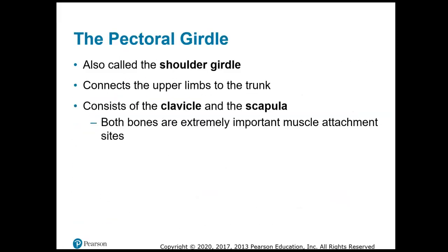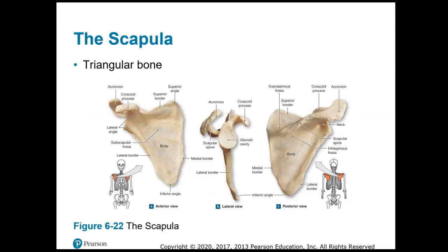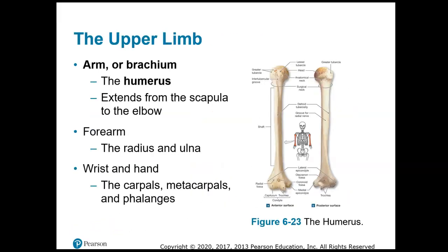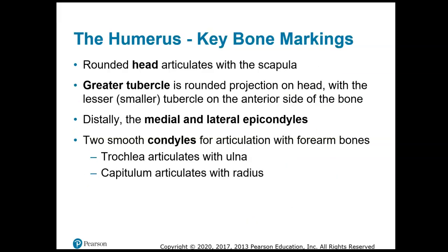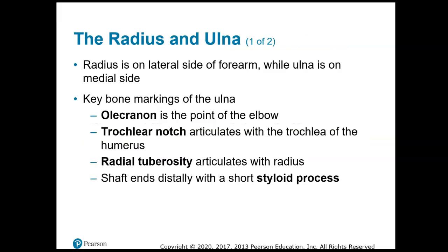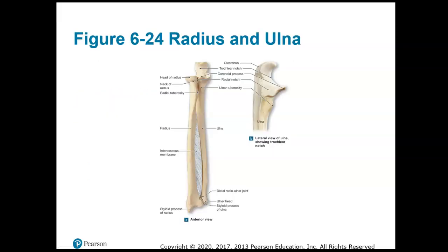The pectoral girdle, also called the shoulder girdle, consists of the clavicle and the scapula — the collarbone and the shoulder blade. The humerus is found in the arm, or brachial region. The elbow is formed by the bone marking called the olecranon. The radius and ulna are the forearm bones in the antebrachial region. You can always tell where they are because the radius is along the same side as the thumb, and the ulna is along the same side as the pinky.